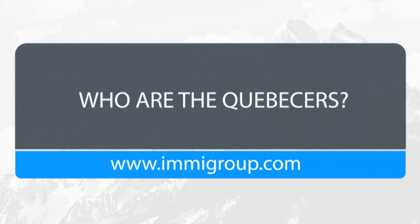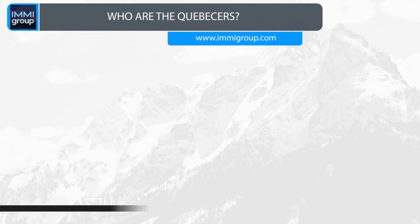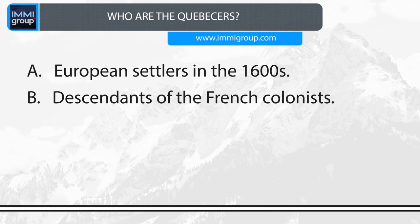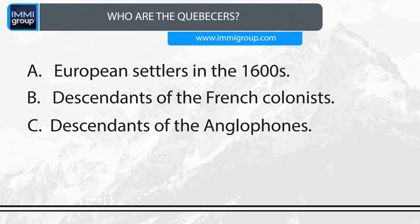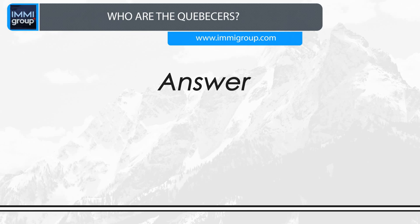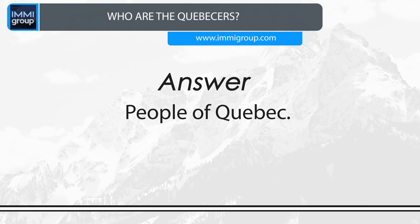Who are the Quebecers? A. European settlers in the 1600s. B. Descendants of the French colonists. C. Descendants of the Anglophones. D. People of Quebec. Answer: People of Quebec.